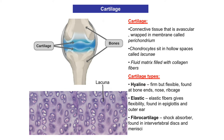Fibrocartilage acts as our shock absorbers and is found in our intervertebral discs within the spinal cord and also at the menisci in our knees. If you're physically active — jumping, running, landing — the fibrocartilage pretty much absorbs the shock and recoils, which is pretty handy.